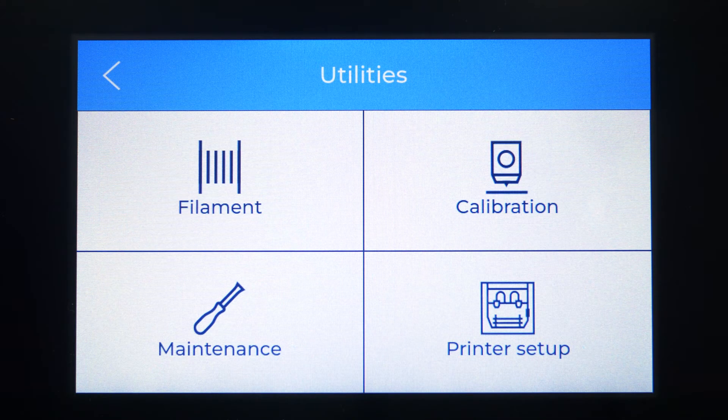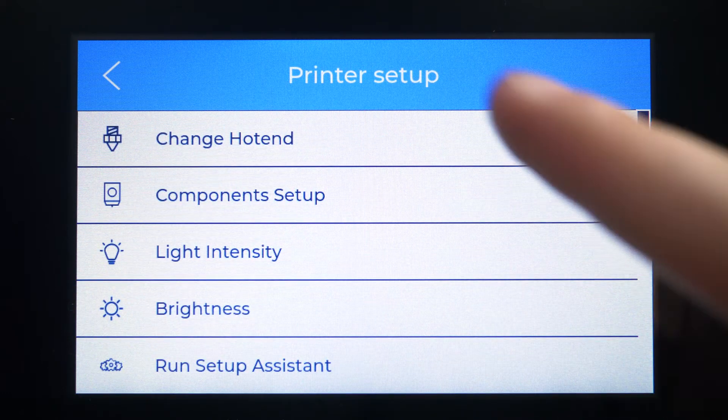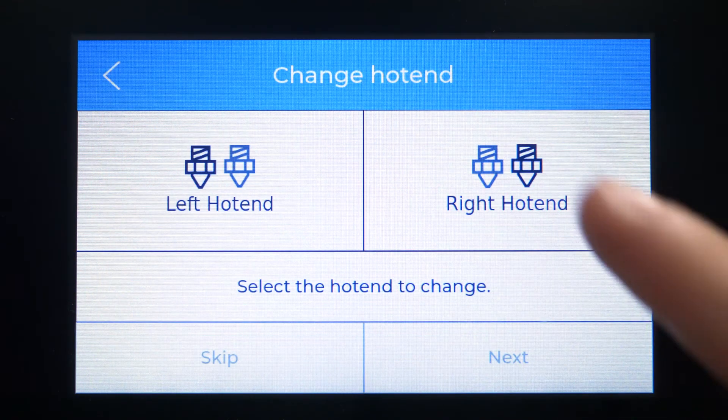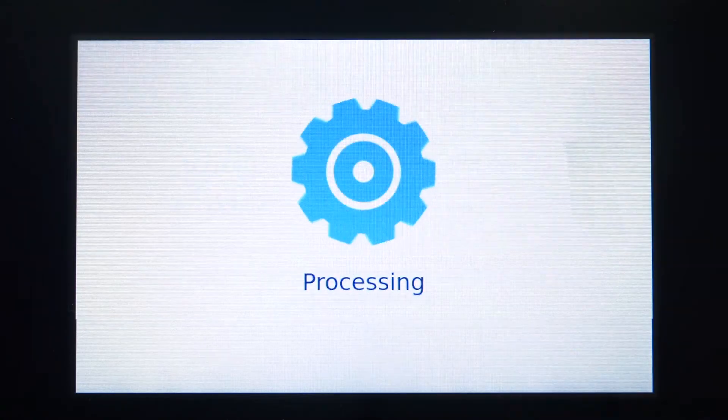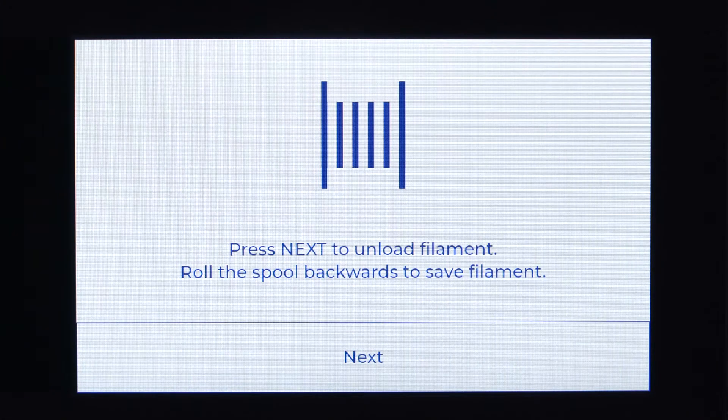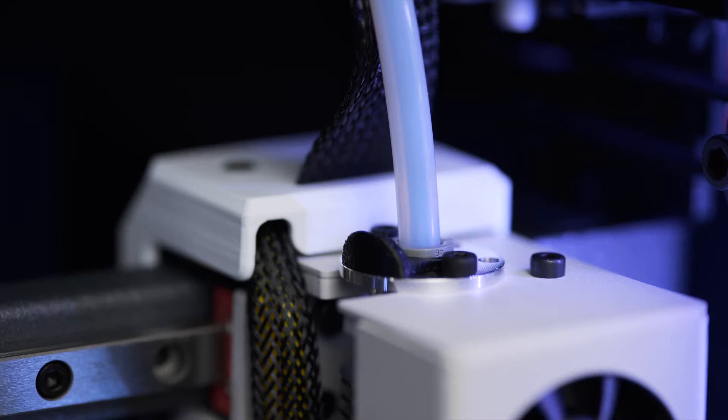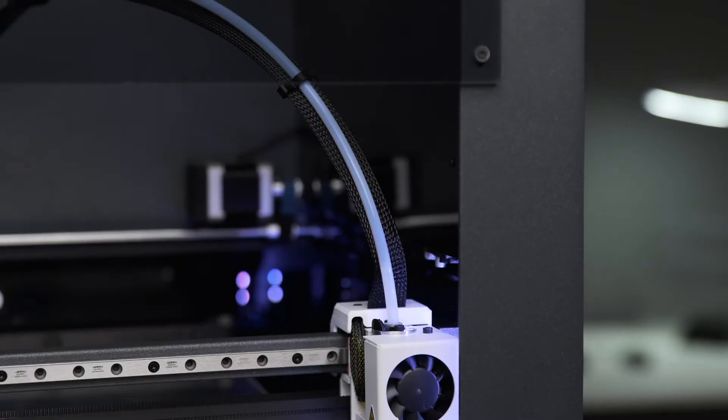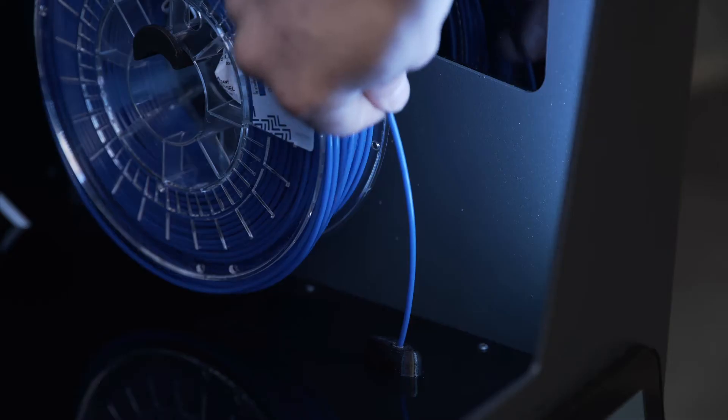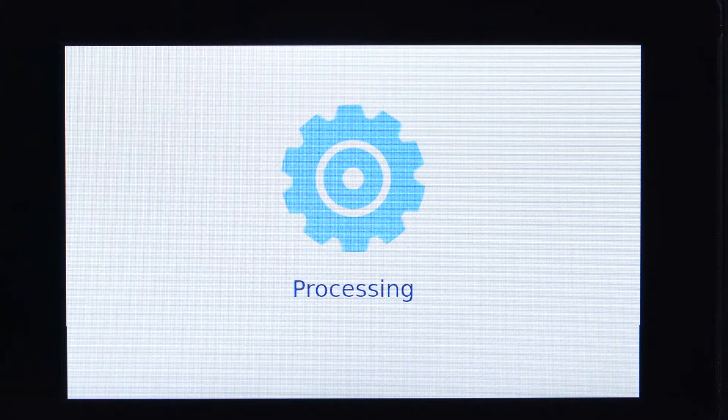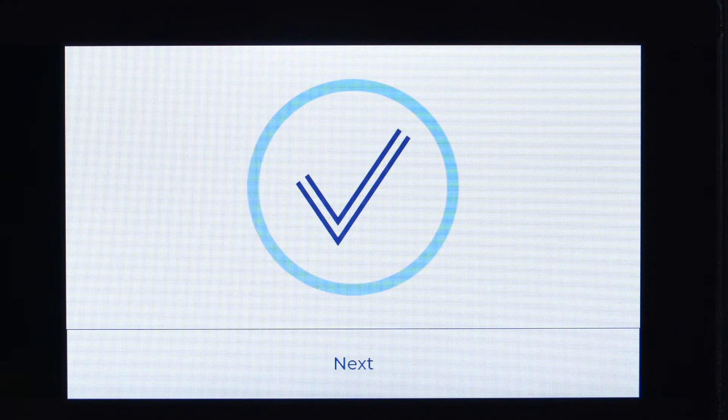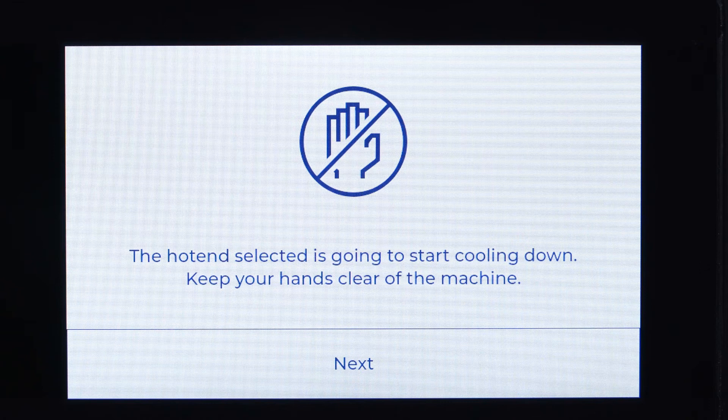In order to change your printer's hotend, start the Hotend Changing Assistant. Select the desired hotend and press continue to unload the filament. Once unloaded, wait until the hotend cools down.